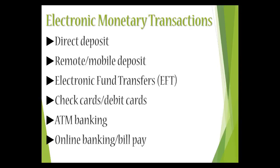Check cards and debit cards are an electronic form of payment that allows you to pull money from your checking account to purchase things, as opposed to a credit card in which you're taking out a short-term loan. With a debit card, you're taking money immediately out of your checking account, so there's no debt or loan that needs to be repaid. ATM banking is your ability to deposit, withdraw, or transfer funds in your account by interacting with the machine — most people are comfortable and familiar with ATMs. And online banking and bill pay allows you to have bills automatically paid from your checking account without having to mail in or physically write a check. All of these electronic transactions are pretty standard in today's banking industry.